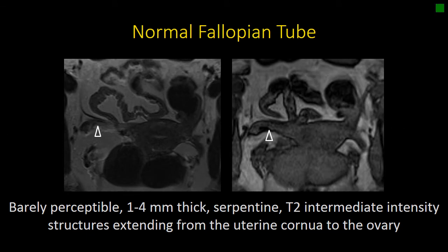On MRI, the fallopian tube itself is often barely perceptible. It's described as being 1 to 4 millimeters in thickness when normal, and having T2 intermediate signal, which is why it's difficult to distinguish from adjacent structures. Sometimes an opposed-phase image can create an India ink artifact, separating the fallopian tube and mesovarium from the adjacent fat, making it more readily apparent.